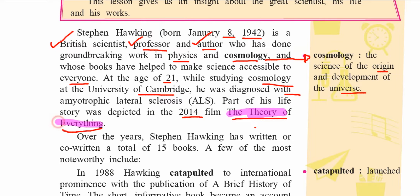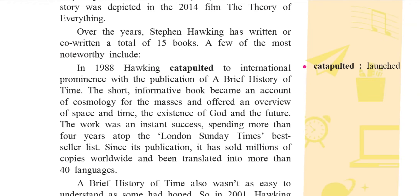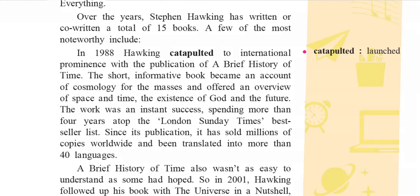Over the years, Stephen Hawking has written or co-written a total of 15 books. A few of the most noteworthy will be discussed here.